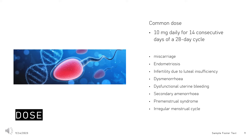Endometriosis (Adult): 10–30 mg daily from day 5 to 25 of the cycle, or continuously. Infertility due to luteal insufficiency (Adult): 10 mg daily from day 14 to 25 of the cycle for at least 6 months. Alternatively, 10 or 20 mg daily starting on the second half of the menstrual cycle until the first day of the next cycle. Maintain treatment for at least 3 consecutive cycles.